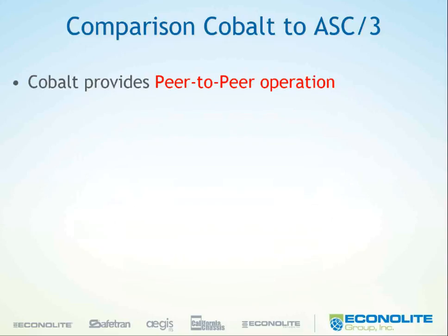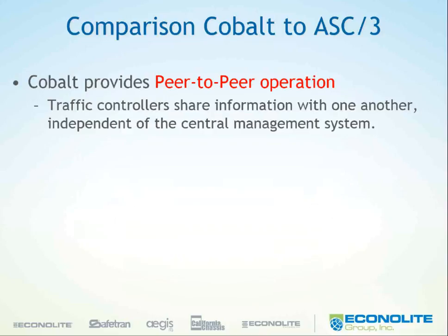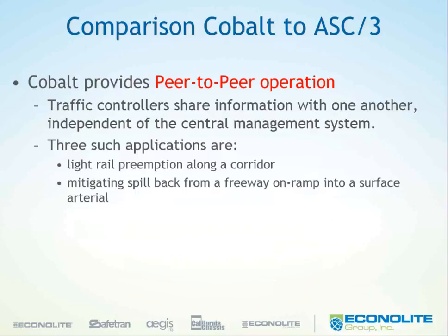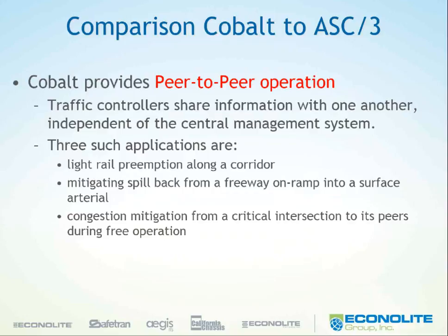COBOLT provides peer-to-peer operation, where traffic controllers can share information with one another, independent of the central system. Three such applications are light rail preemption along a corridor, mitigating spillback from a freeway on-ramp onto a surface arterial, and congestion mitigation from a critical intersection to its peers during free operation. And there are many more. The peer-to-peer function uses the power of a logic processor to perform communication between one intersection and another.